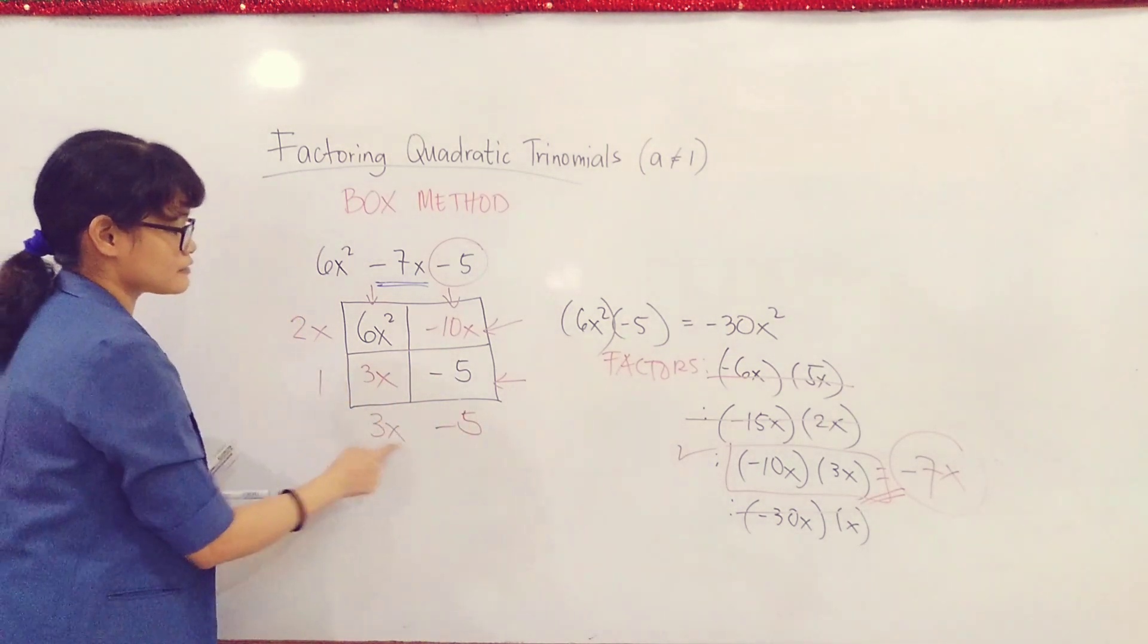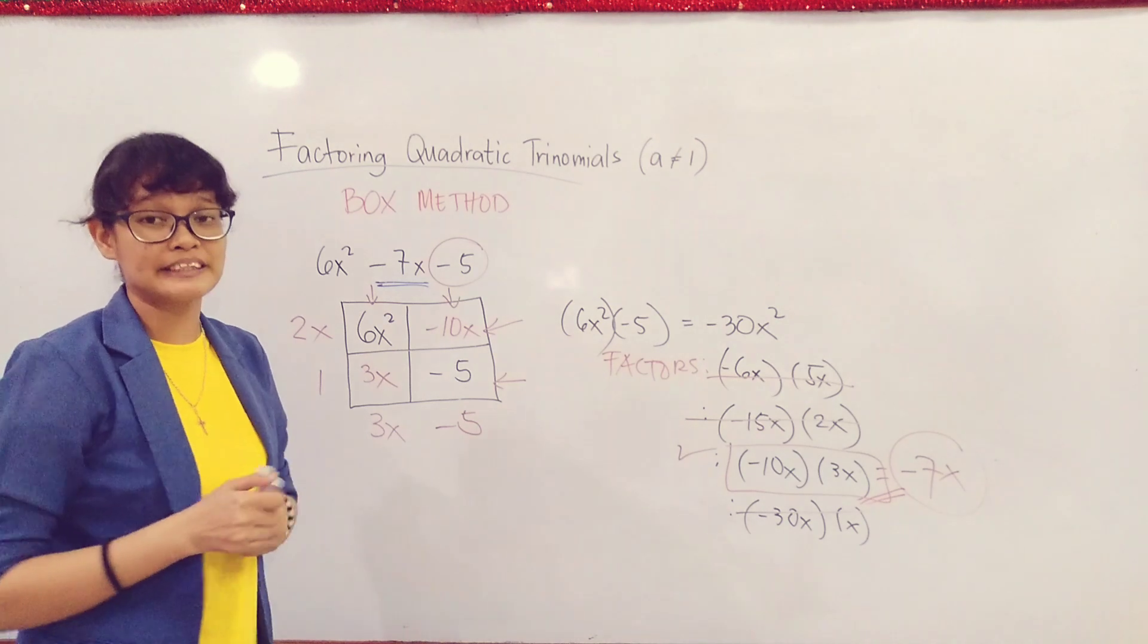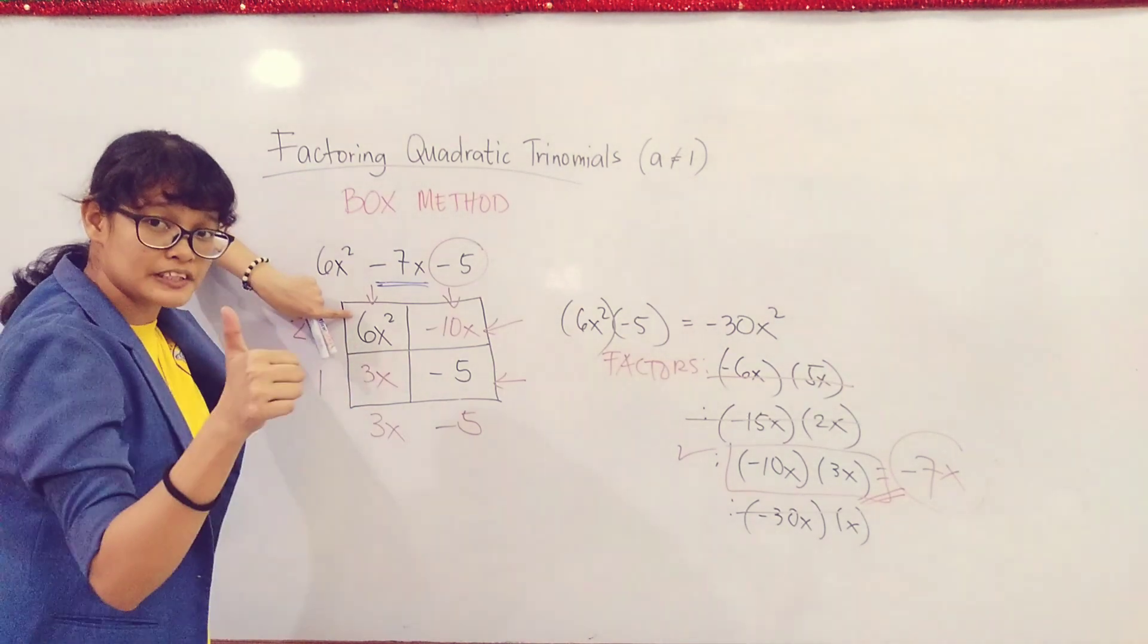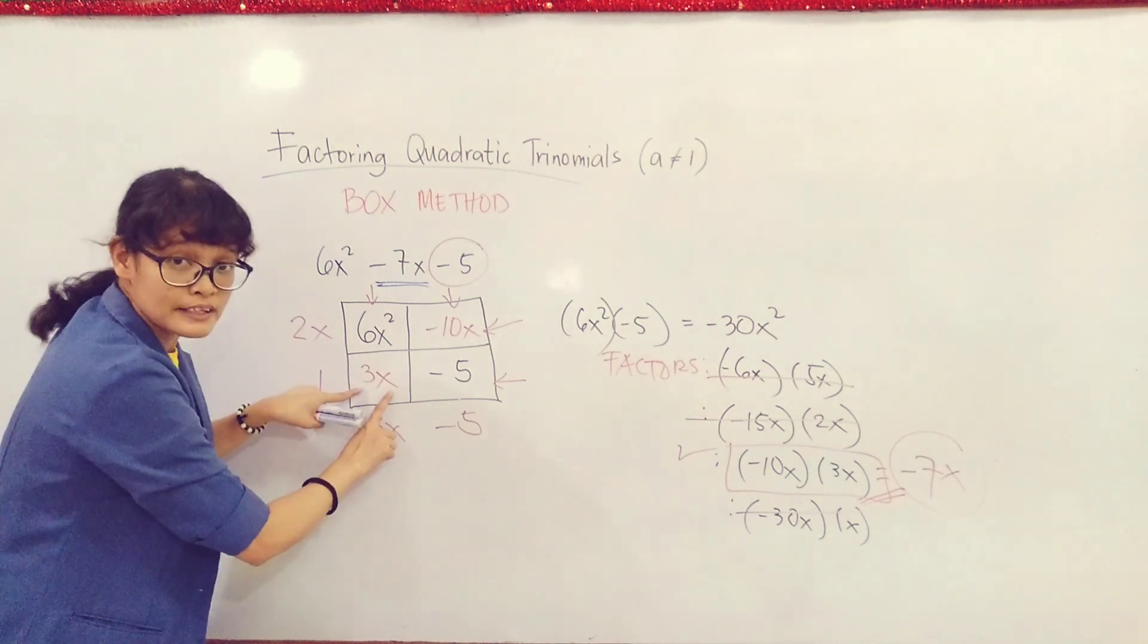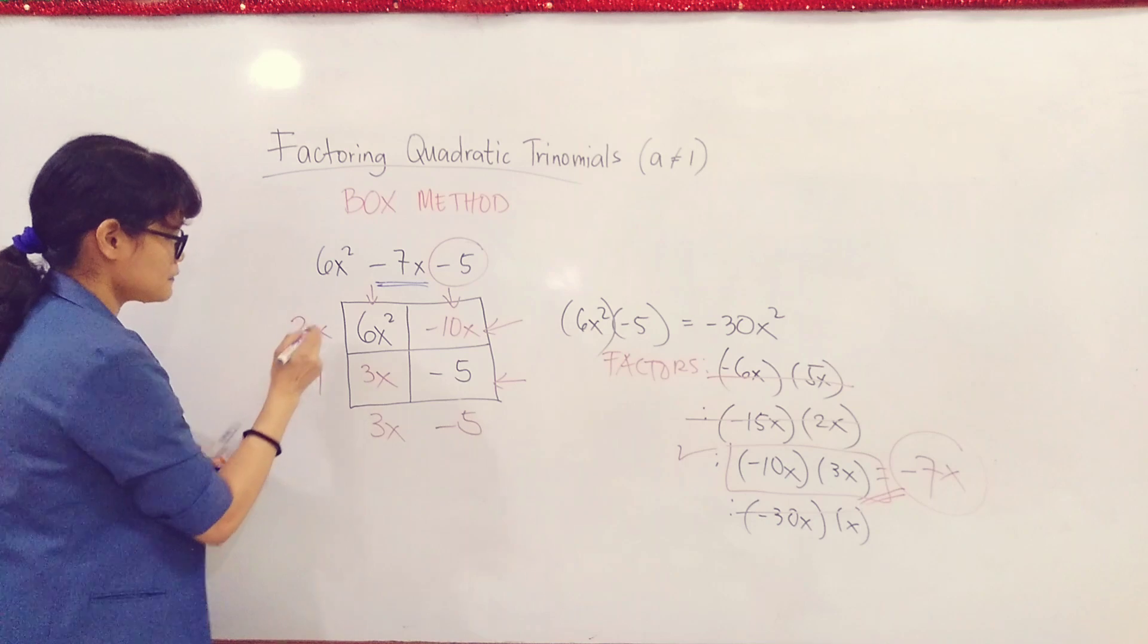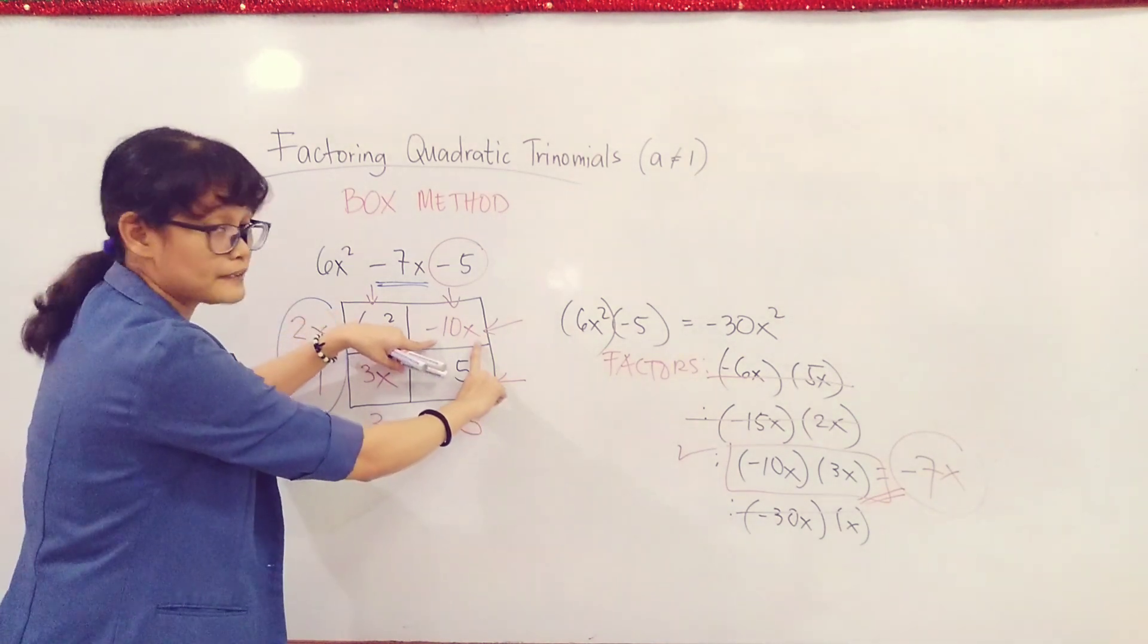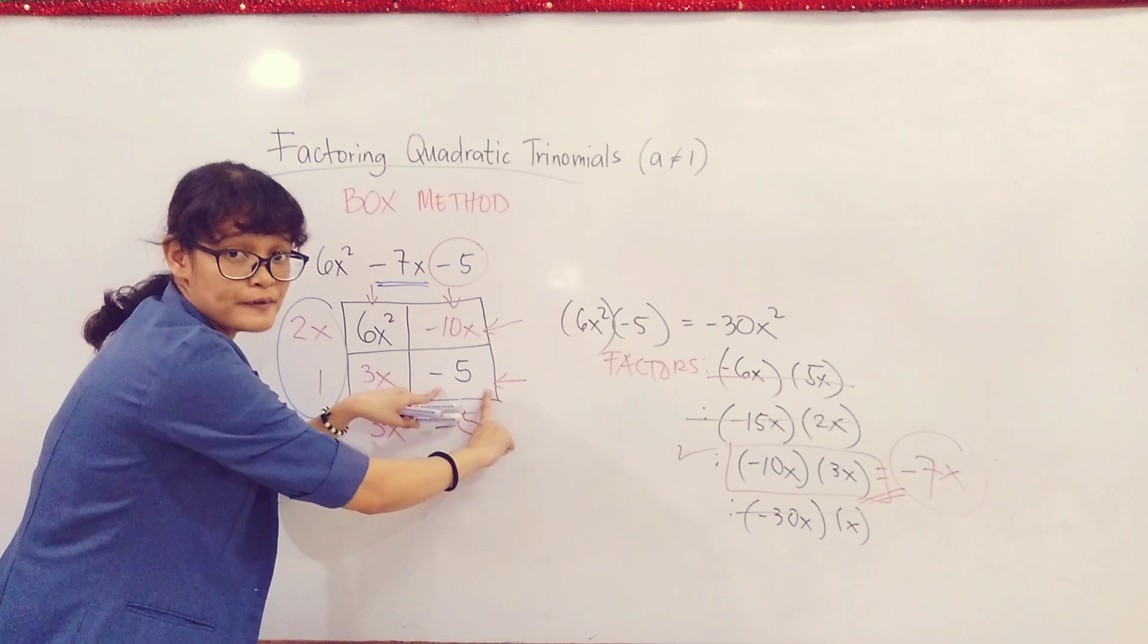So we'll check if our signs are correct. Because they're different - some positive and negative. We'll check. Here's how to check if it's correct. 2x times 3x is equal to 6x², so it's correct. We won't change any sign. Next, 1 times 3x is 3x, so we won't change anything either. This means this factor has the correct sign. So let's check if this sign is also correct. -5 times 2x is -10x, so that's correct too. Next, -5 times 1 is -5.